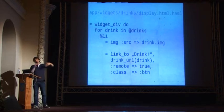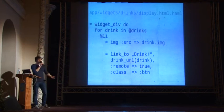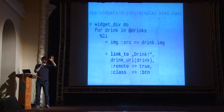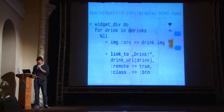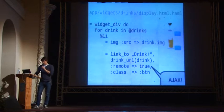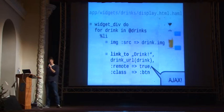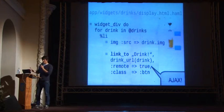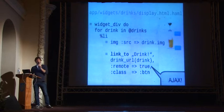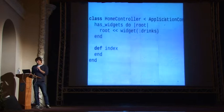I iterate over the drinks I just assigned and stub out a list item. I use the image function to create an image tag to display the wine glass or beer glass. Then I use link_to to create the button. In the button I use remote: true to make it an Ajax link. That's the view for now — it's not yet working with interactivity.